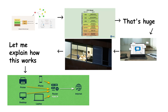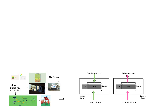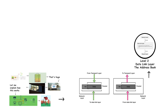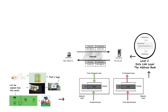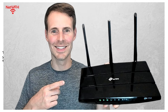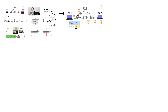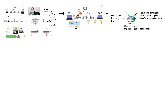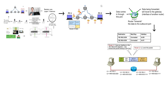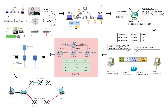Every device on the internet has an IP address — think of it like a mailing address for your house. The network layer takes your data and wraps it in a packet, which includes the source IP address and the destination IP address. Then it figures out the best path to get that packet from your network to the destination network. This is where routers come in — Layer 3 devices that sit between networks and make intelligent decisions about where to send packets. When a packet arrives at a router, it looks at the destination IP address, checks its routing table, and forwards the packet to the next router in line. This process repeats across multiple routers until the packet reaches its final destination.